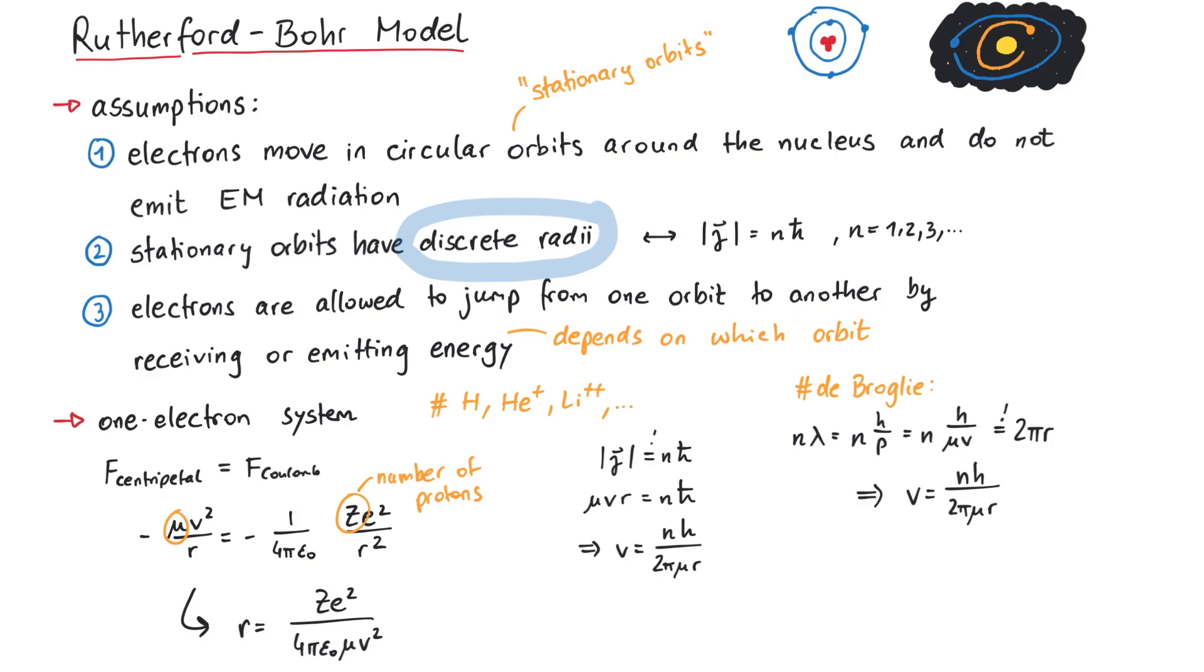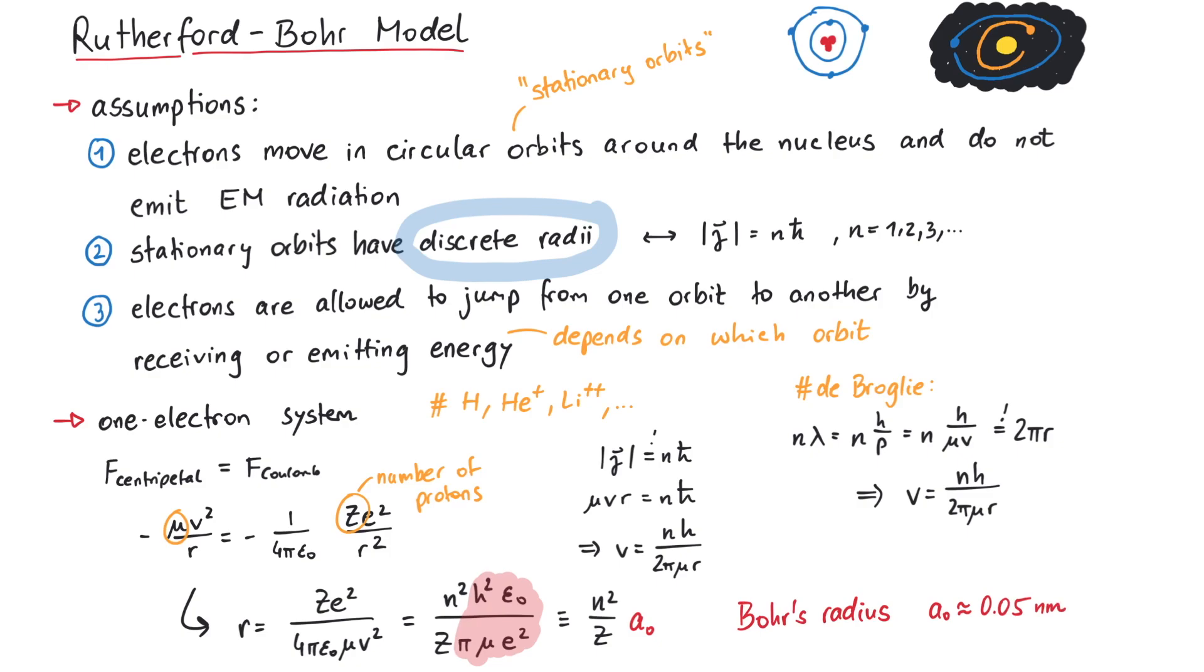Using this, we can express the radius in terms of n, z and some constants, which together are called A0, Bohr's radius. This radius is pretty close to 0.05 nm and gives us a good approximation of the size of an atom.